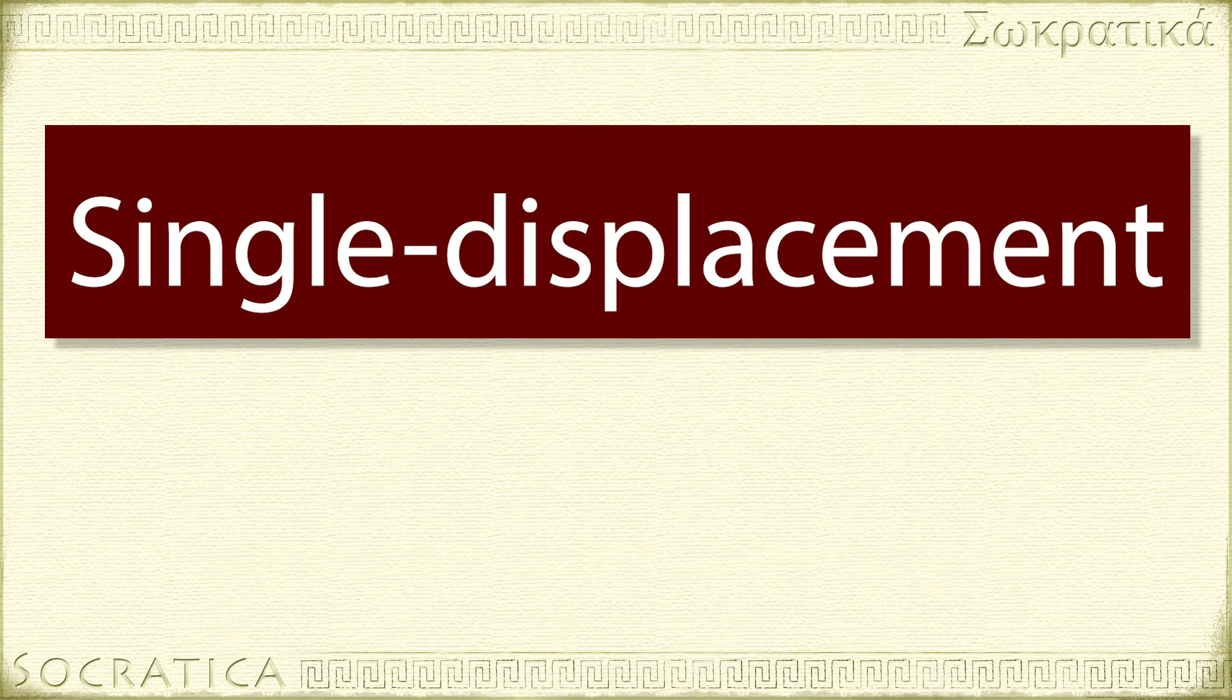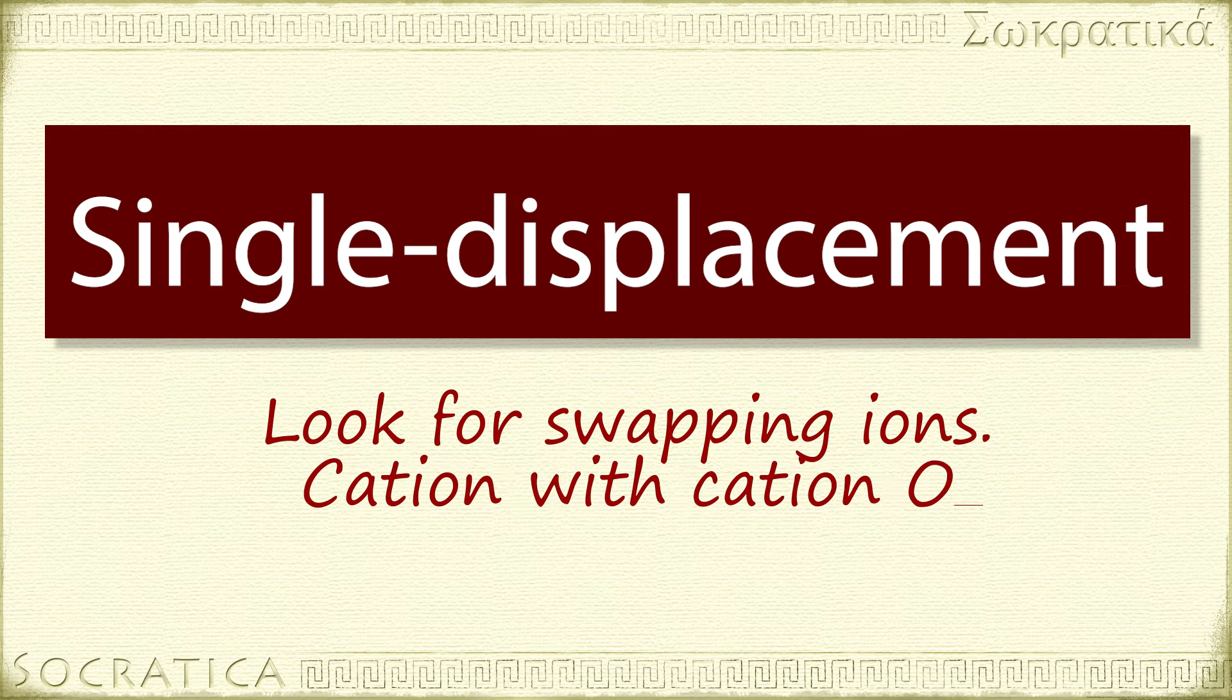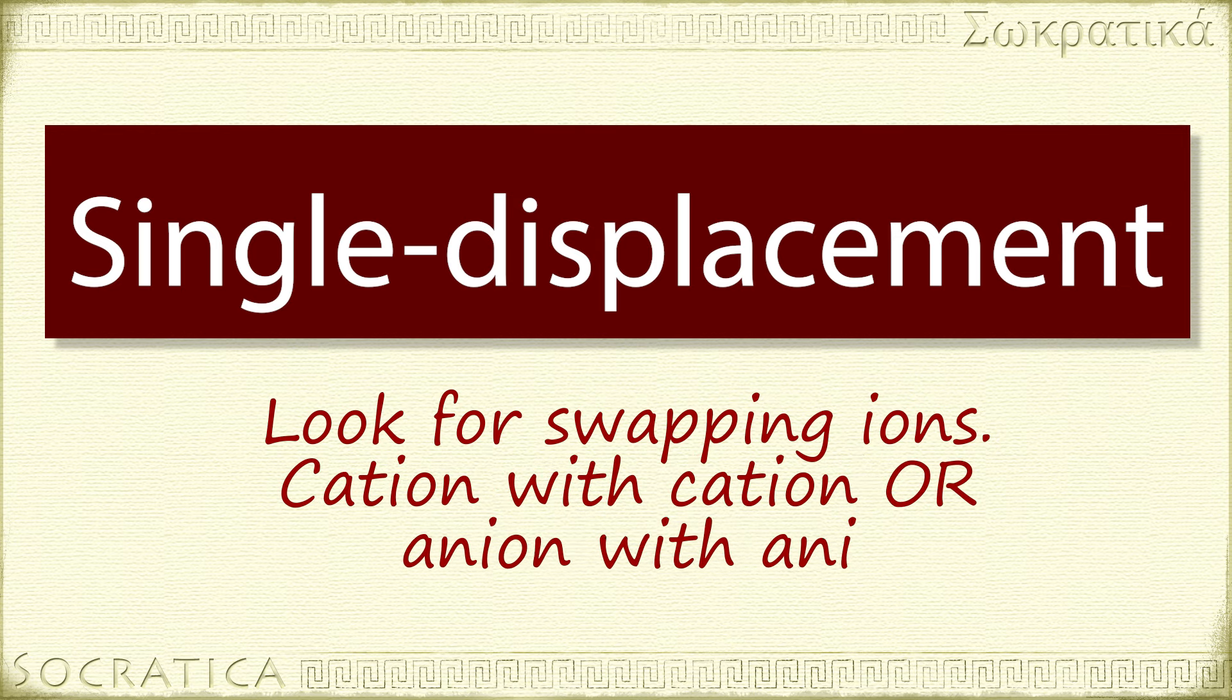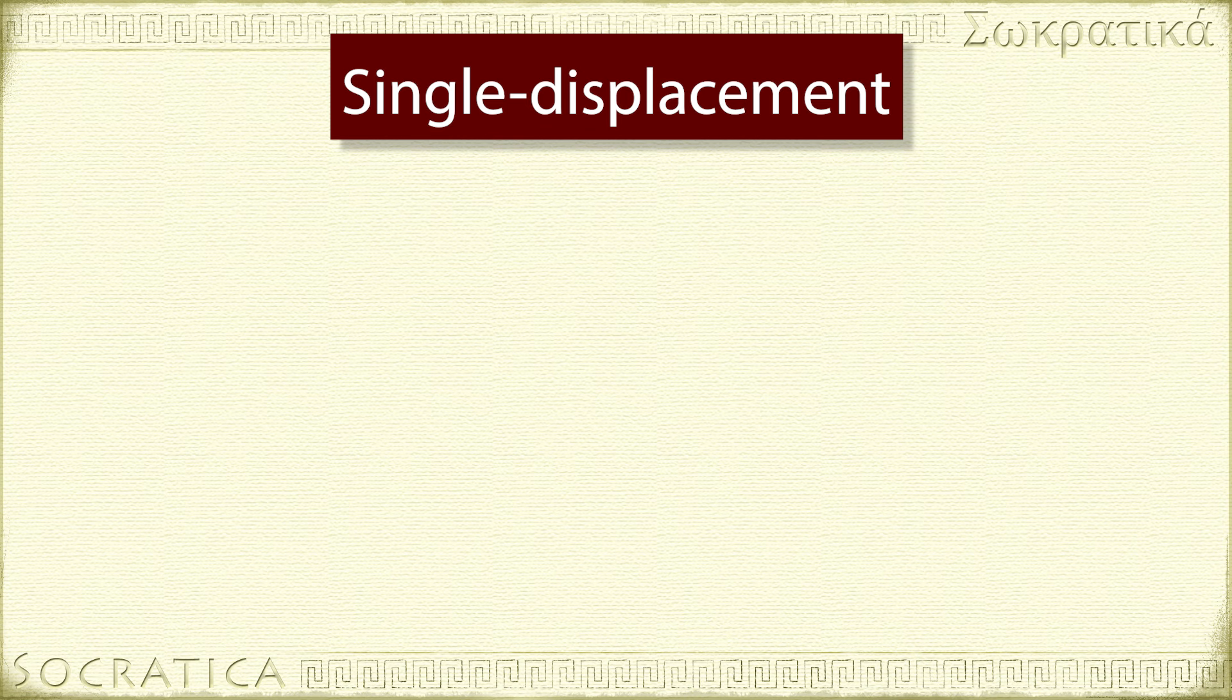Single displacement reactions can be recognized by a kind of swapping that takes place. One ion trades places with another. They can be 2 cations or 2 anions. The general form of a single displacement reaction is A plus BC yields AC plus B.